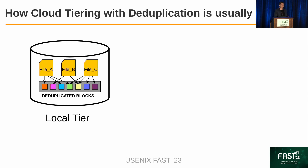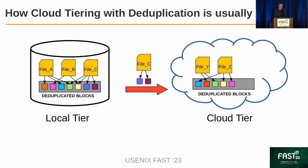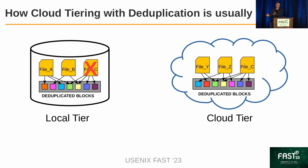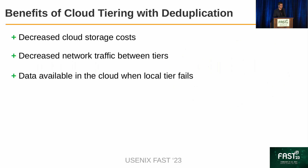I'll start with a short introduction of how cloud tiering with deduplication is usually done. We start with a local tier where the data is already deduplicated — data is kept as deduplicated blocks. We want to move selected files to the cloud in a way that data in the cloud is also deduplicated. After the files are moved, we can remove them from the local tier to reclaim space. Benefits include reduced cloud storage cost, decreased network throughput between tiers, and data availability even if the local tier fails.